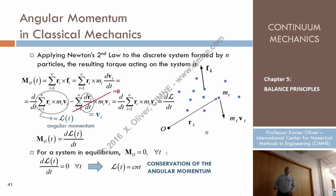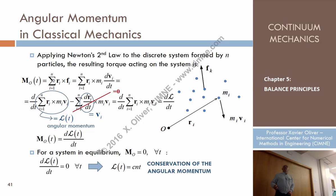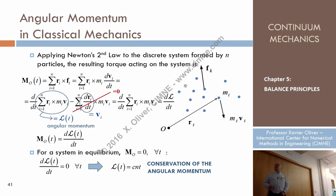Now let's consider this system of particles, the forces on these particles, and the moment of every one of these forces — the torque of every force with respect to point O. To obtain the torque of every force with respect to point O, we sum the forces of every particle. This is the expression of the external moment — the external moment coming from the external forces acting on the system of particles — the external torque at point O.